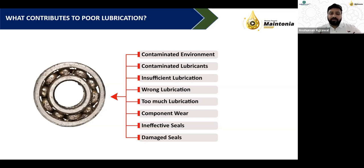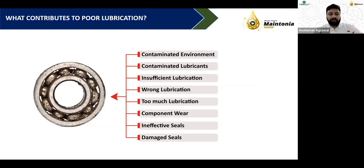Too much lubrication is also bad — overfilling tanks leaves no header space, preventing proper breathing in and breathing out. Component wear occurs even when lubricants are used due to close tolerances at mating surfaces. Ineffective sealing allows atmospheric dust to enter through leakage points and stick to seals, entering the system. Damaged seals have the same effect.